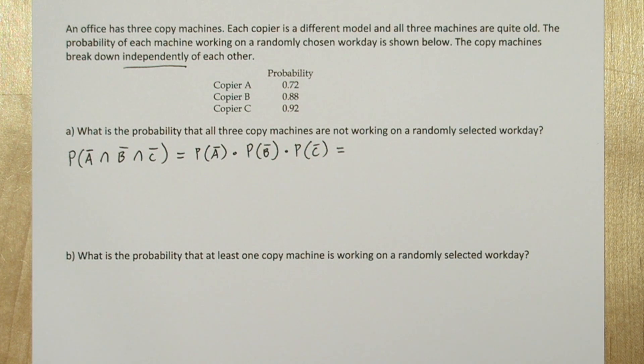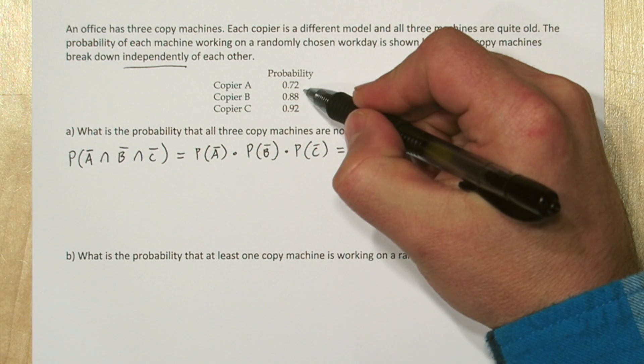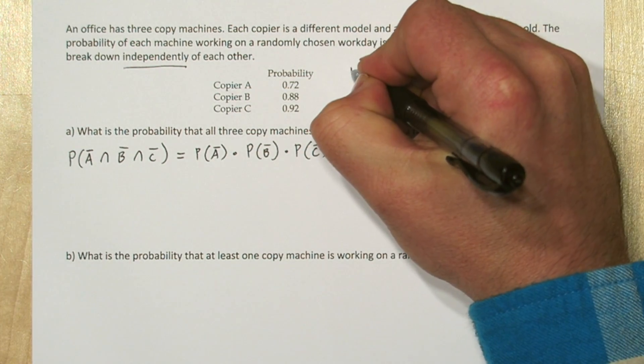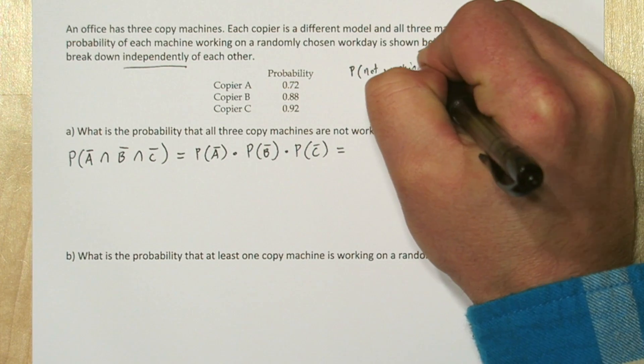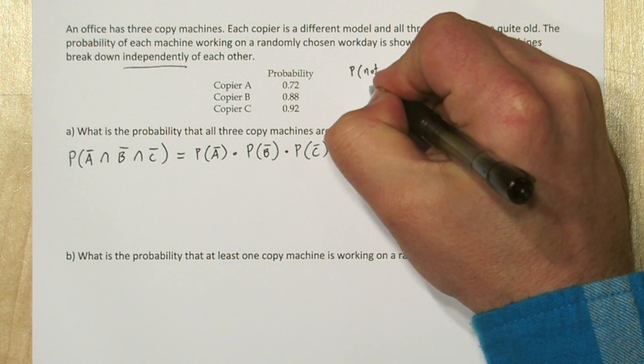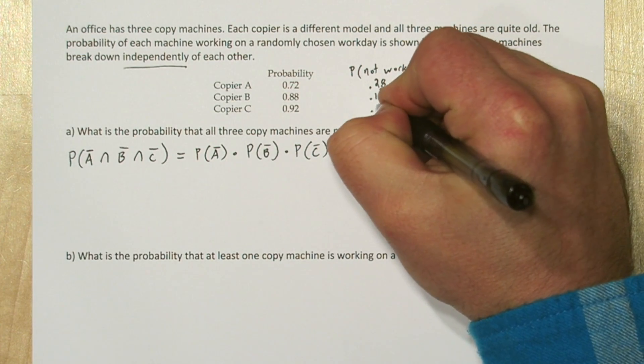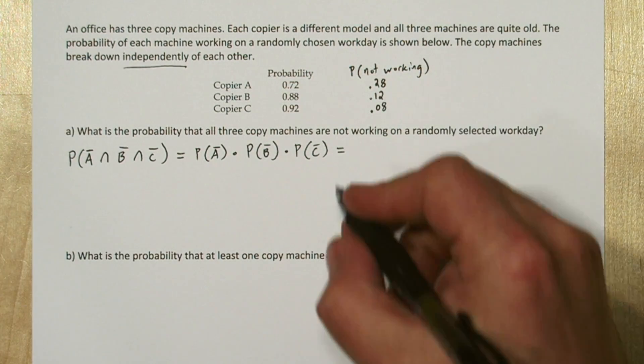To determine each of those probabilities, we just need to subtract each of the working probabilities from one. So we'll add a column up here to our table. If the probability of copy machine A working is 0.72, then one minus that is 0.28. And we'll do that for the other two copiers.